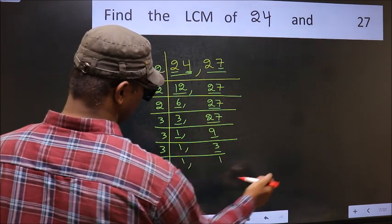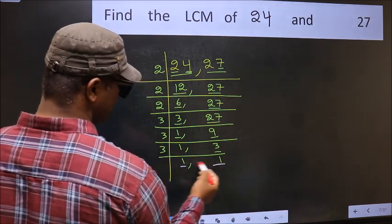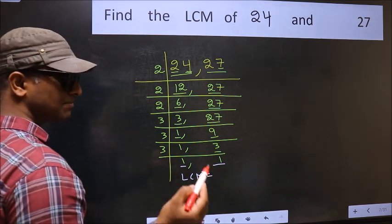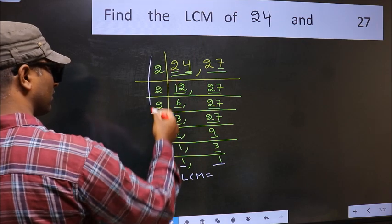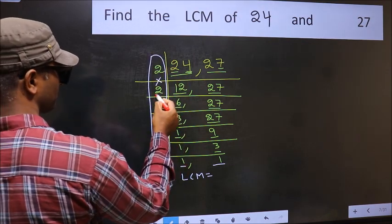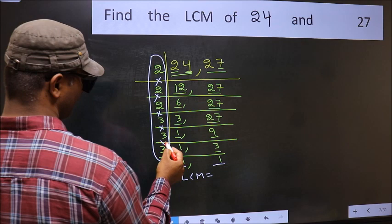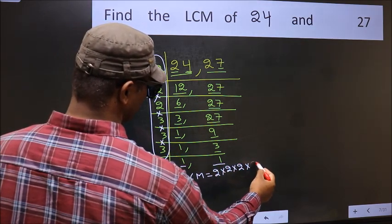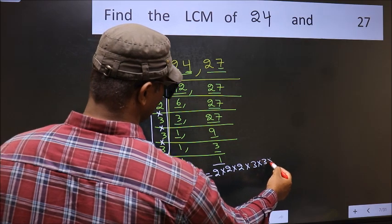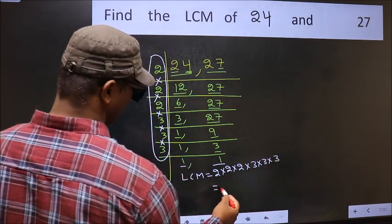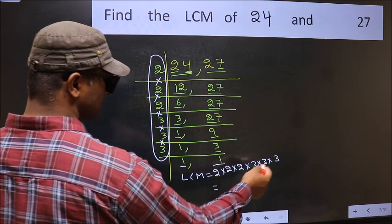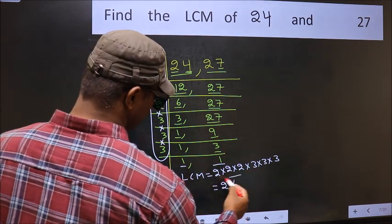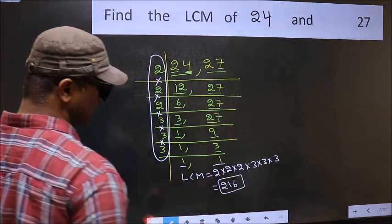We got 1 in both places. So our LCM is the product of all these divisors: 2 times 2 times 2 times 3 times 3 times 3. When we multiply these numbers we get 216. So 216 is our LCM.